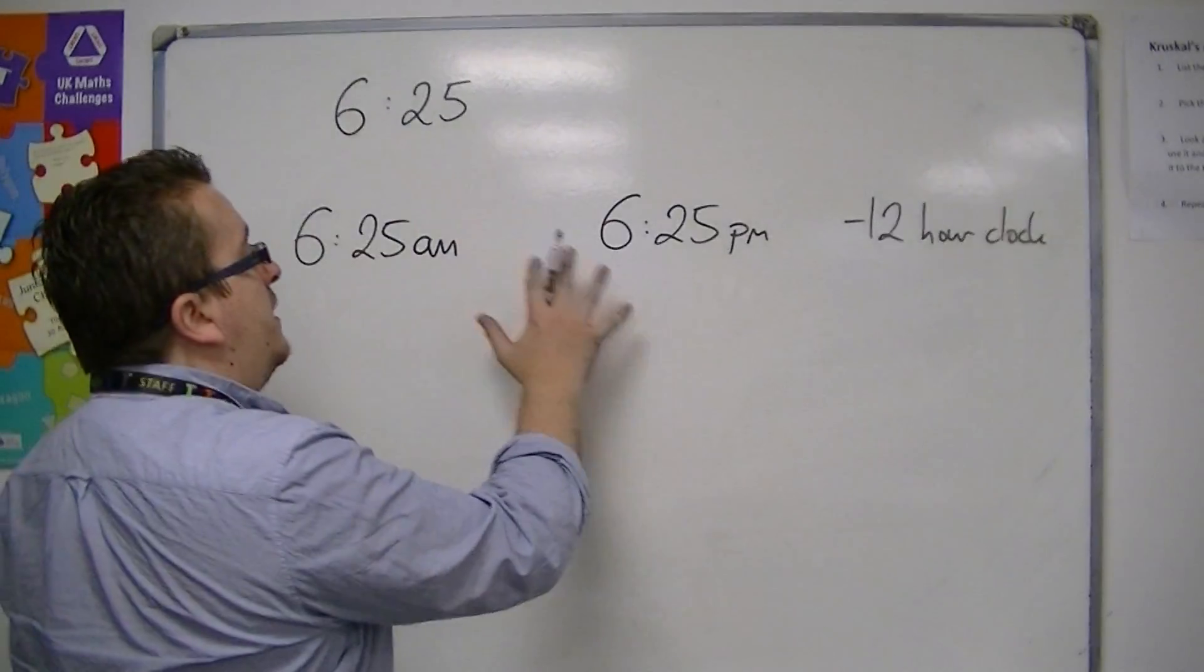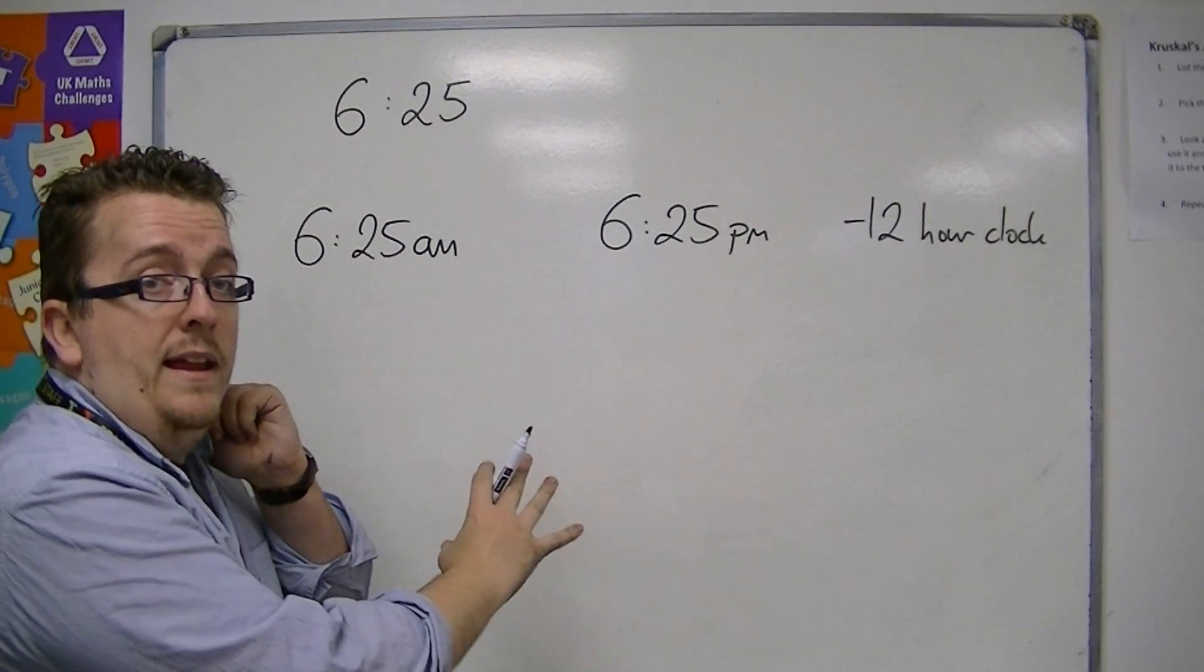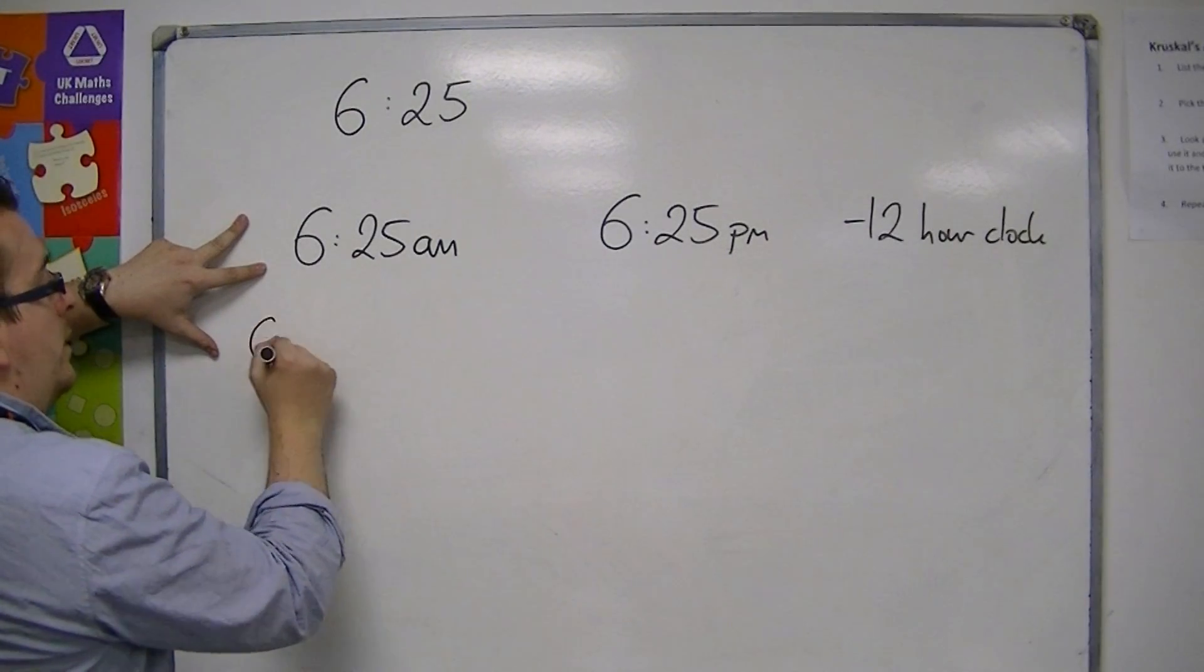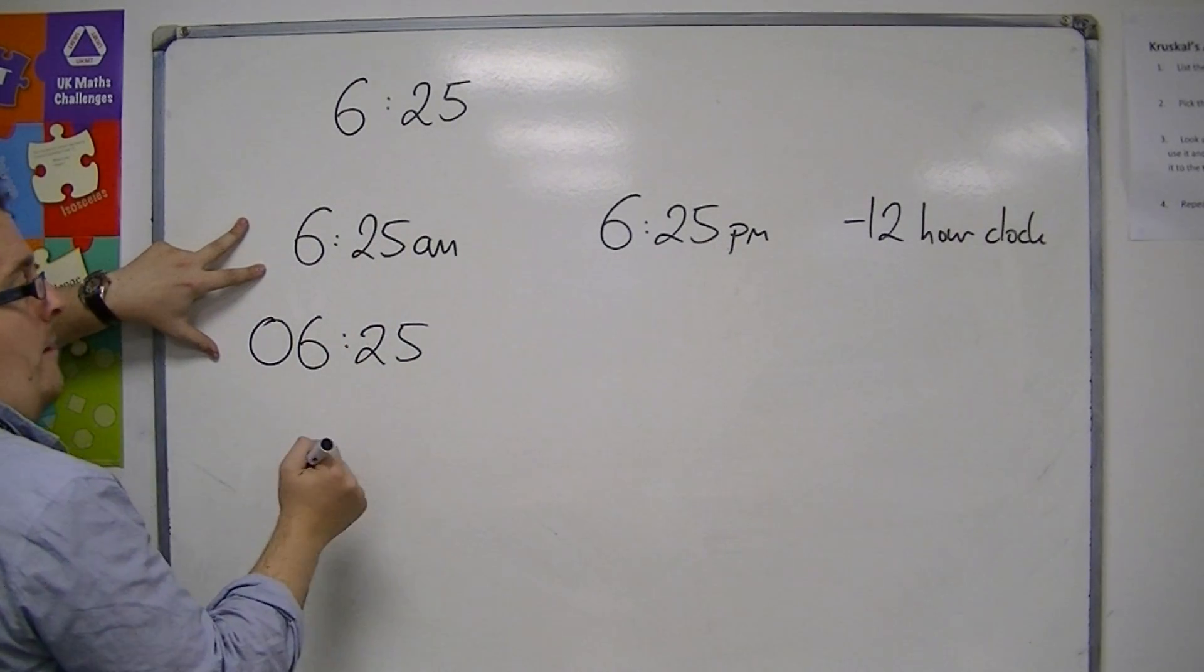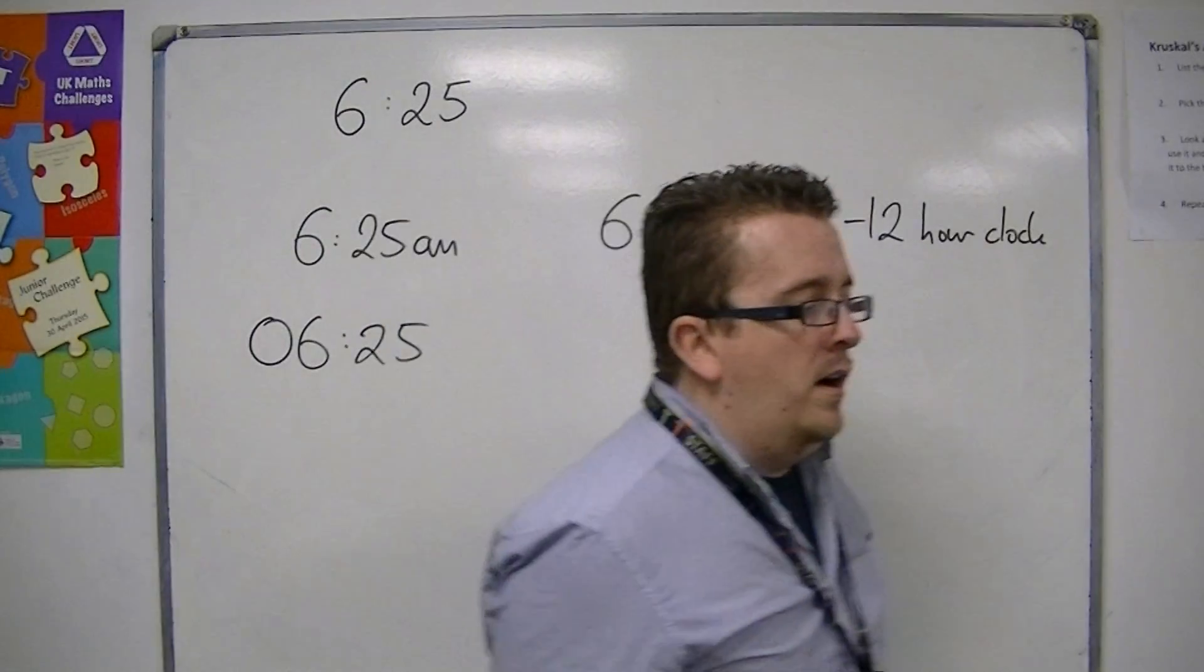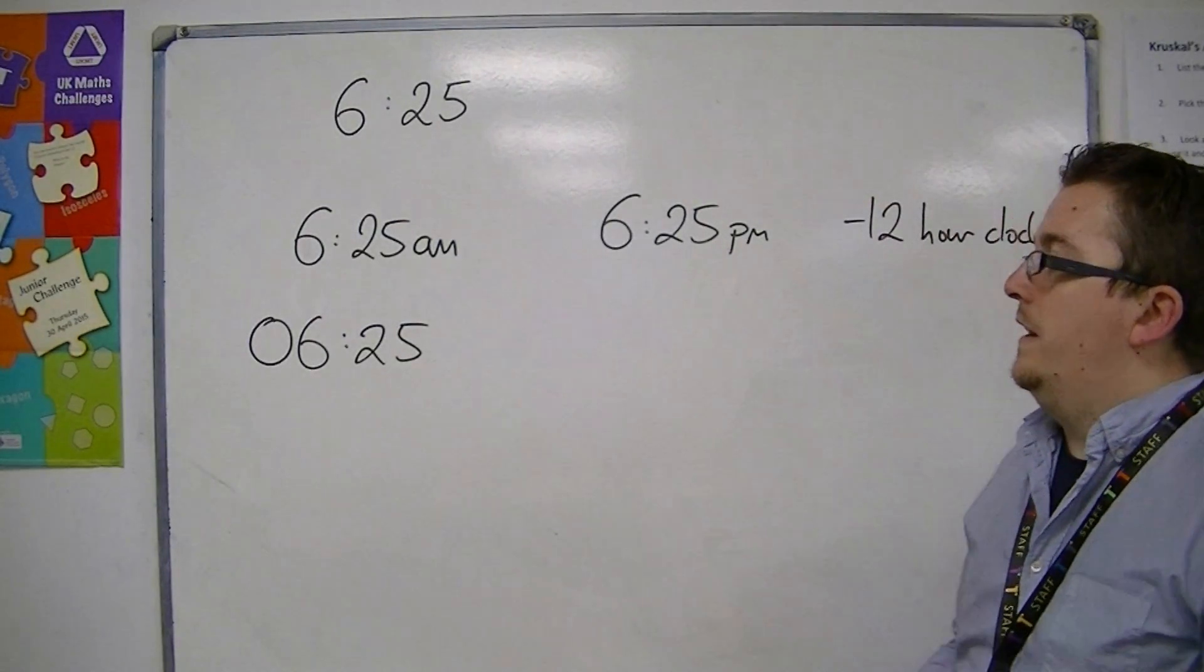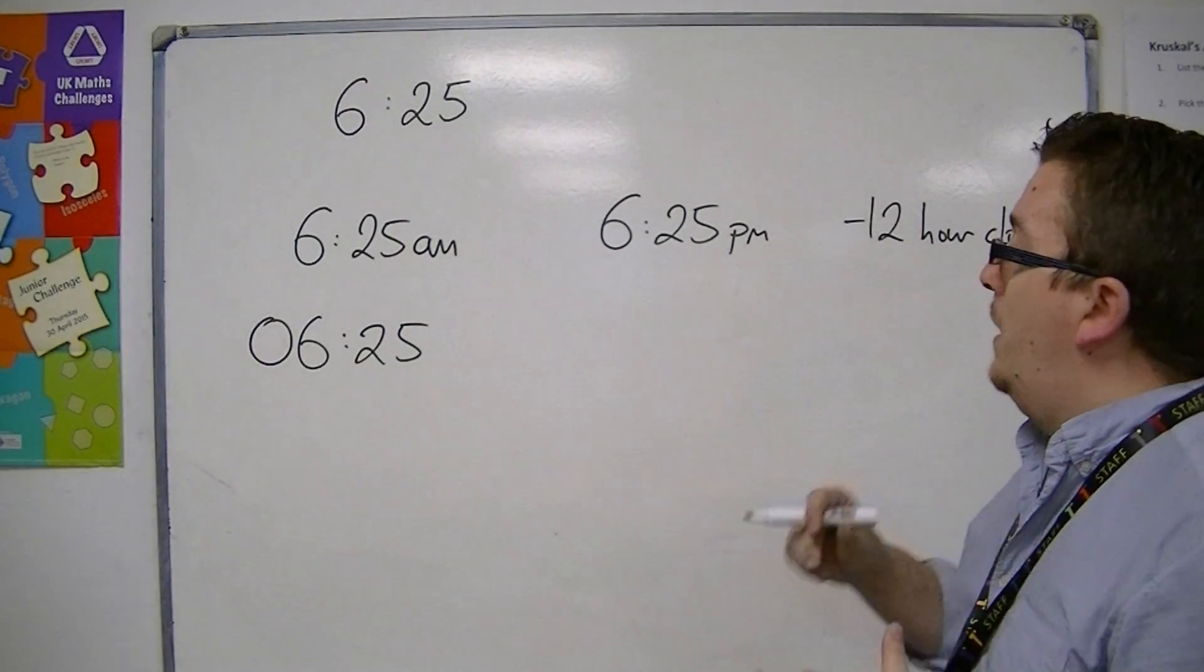Now, you need to be able to go from 12 hour clock to 24 hour clock and back again, and be able to recognise that this 6.25am in 24 hour clock is written as 0625. OK? So you might think, like, army films, they usually say we are going to wake up at 0600, or something like that, or 0500. And they are relating it back to 24 hour clock.